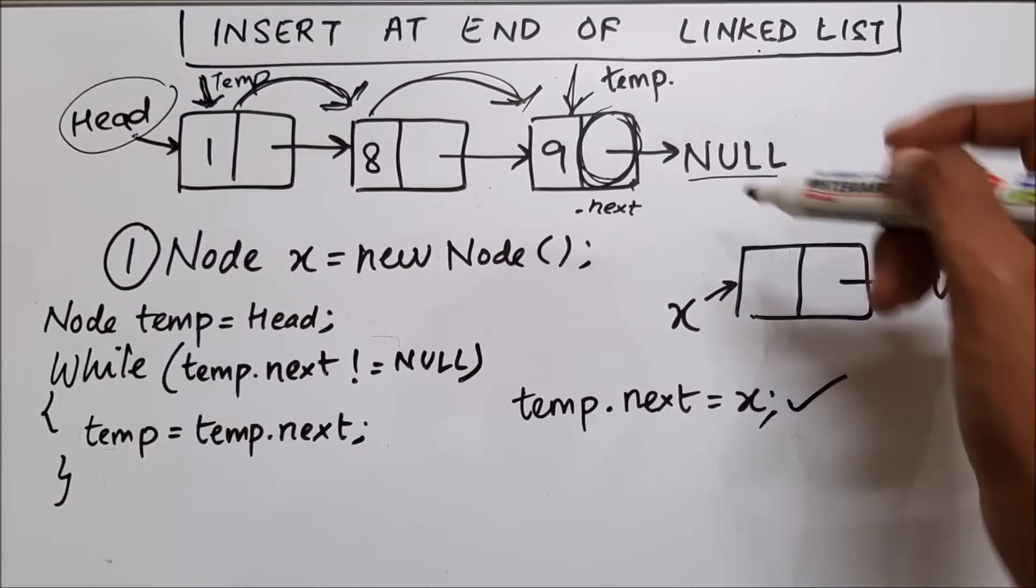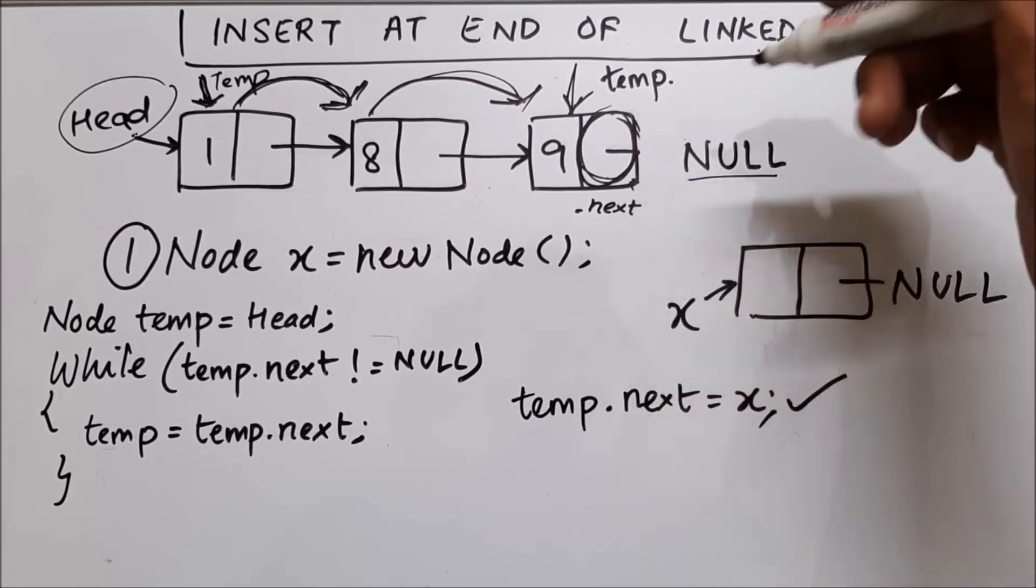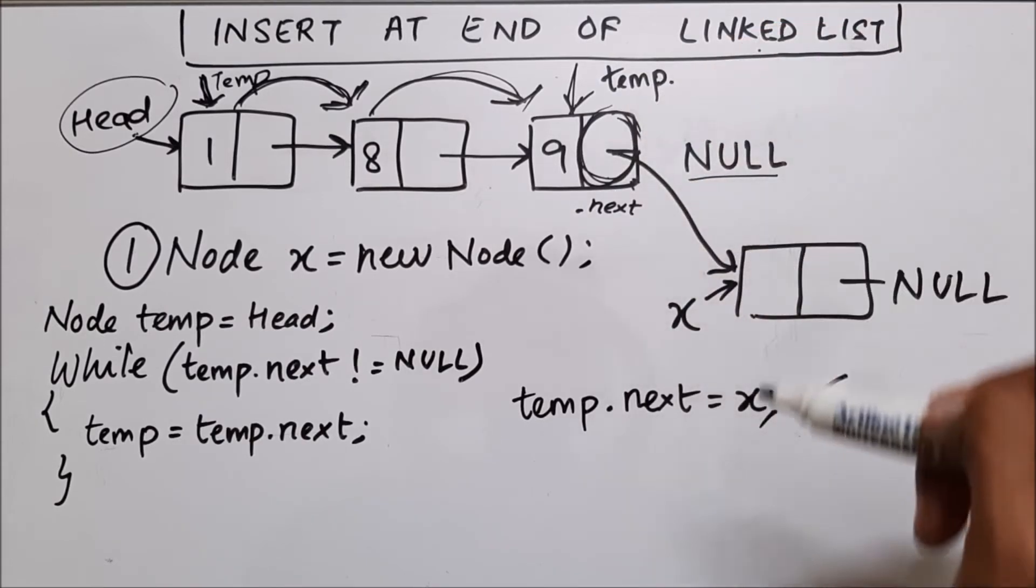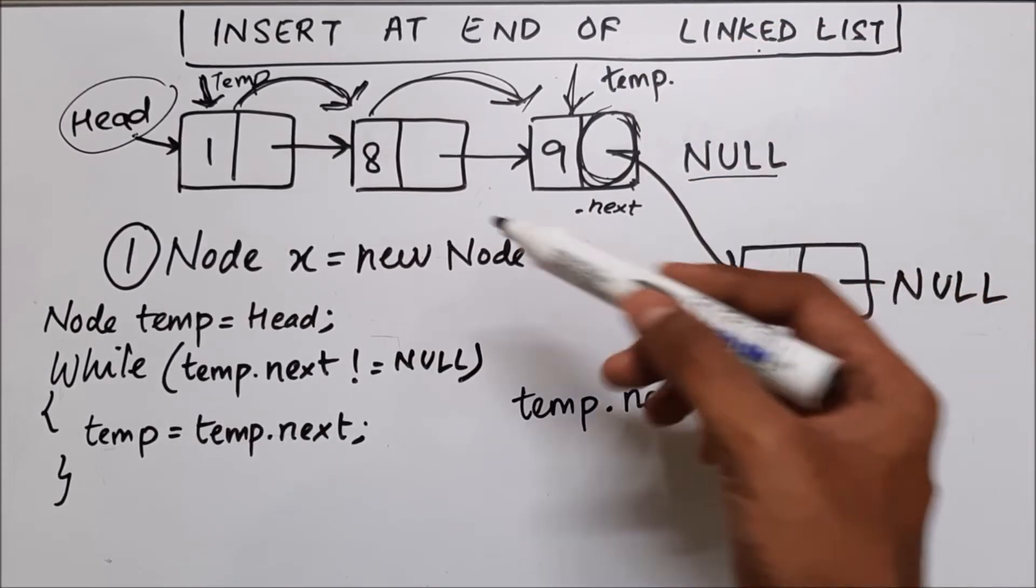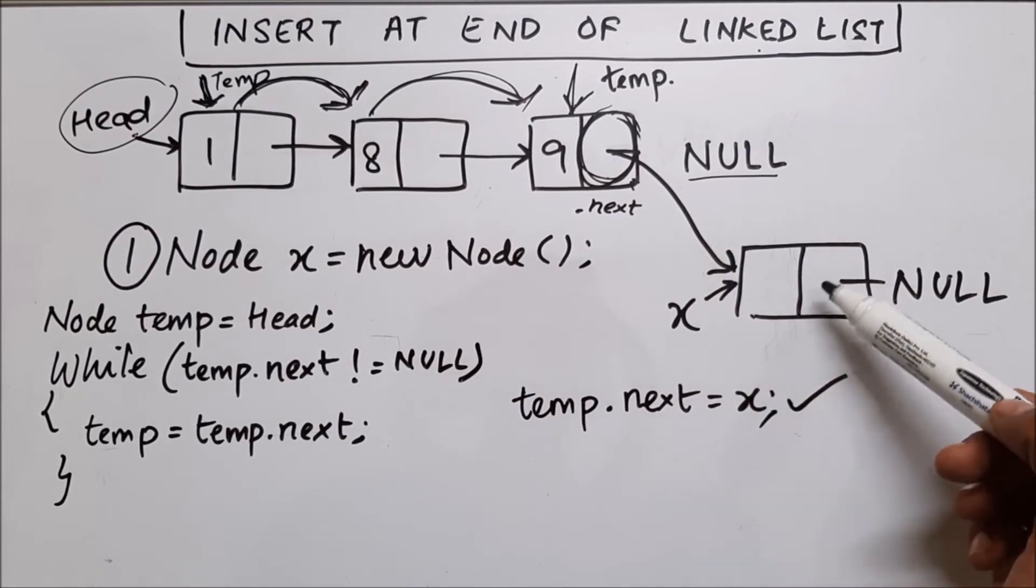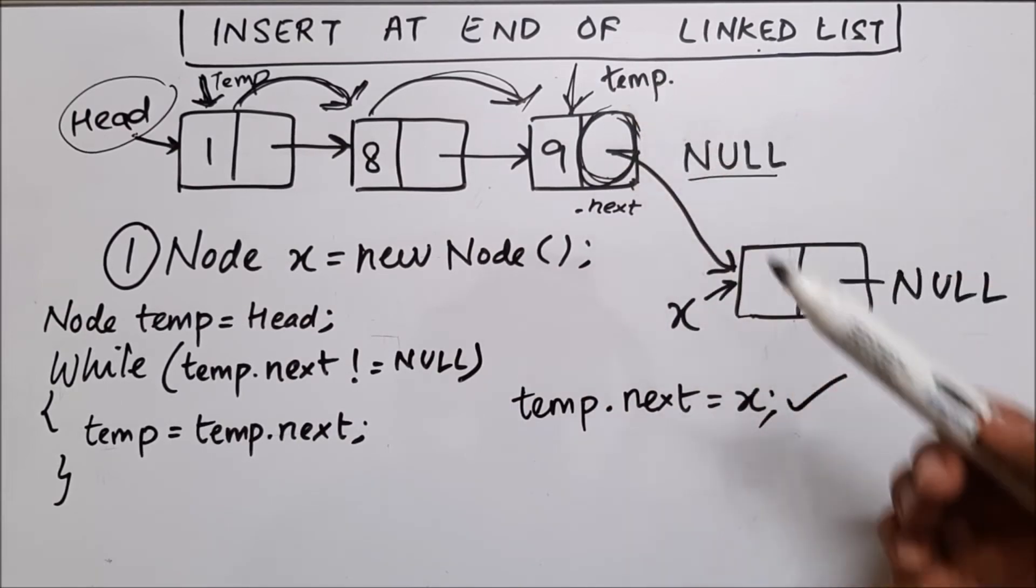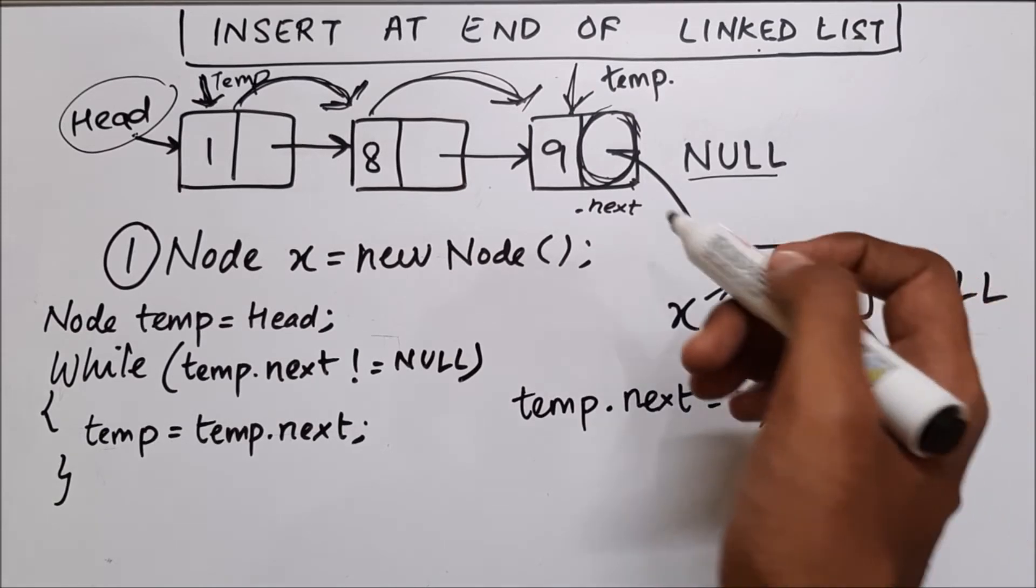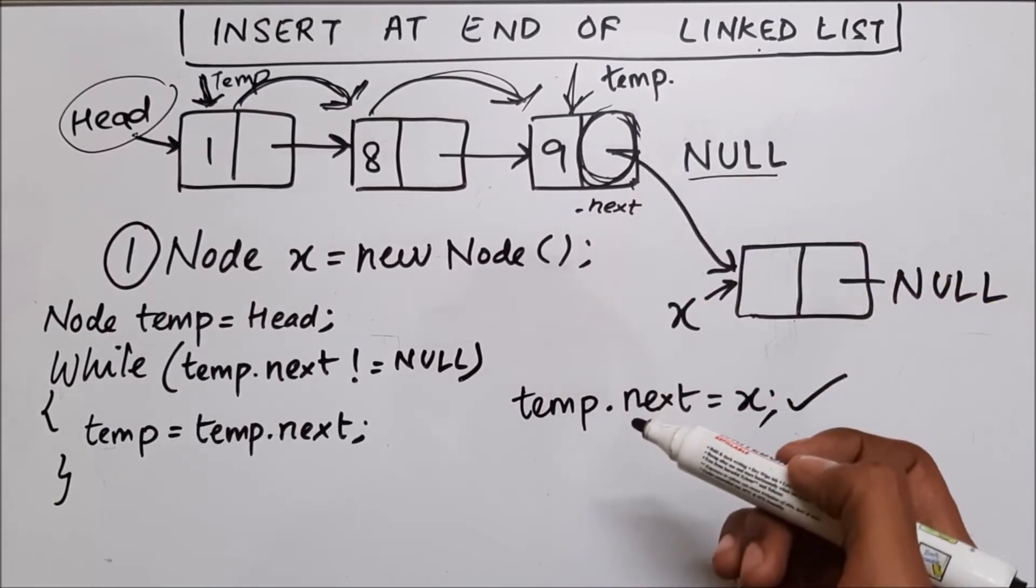So when this line is executed, I'm going to make this point over here. So this will now point to x. So we have a new linked list and this node has been added at the end of the linked list. So this is how you add a node at the end of a linked list. But here we have one more problem.